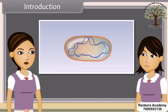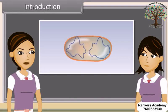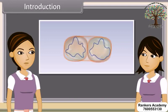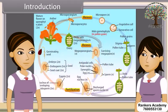As we have already discussed, reproduction is the ability of all organisms to produce young ones similar to themselves in most of characters. The process which involves fusion of male and female gametes to form a new individual is known as sexual reproduction.